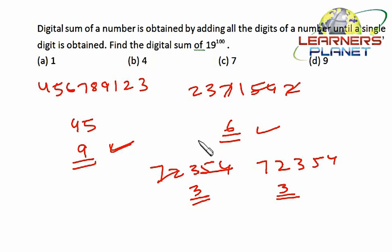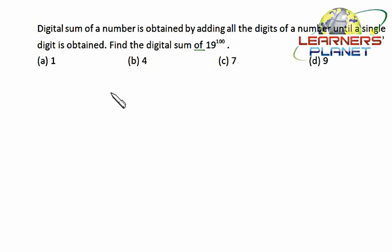Now let's do this problem. That means, even in this case, the digital sum of 19 raised to 100 will be a number or a remainder which we are getting if we divide 19 raised to 100 by 9. So let's divide 19 raised to 100 by 9.